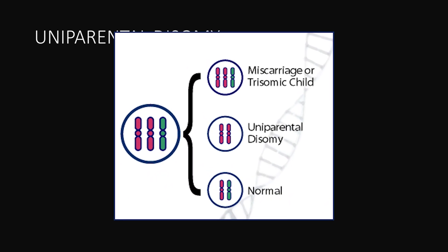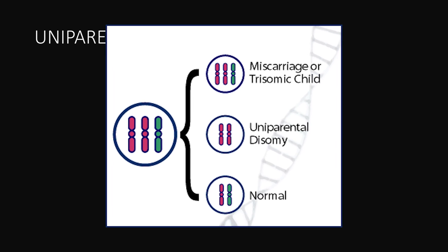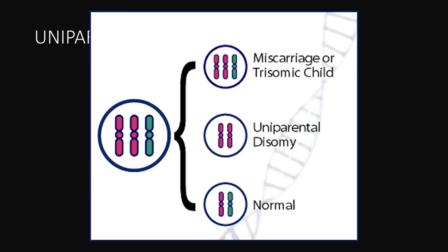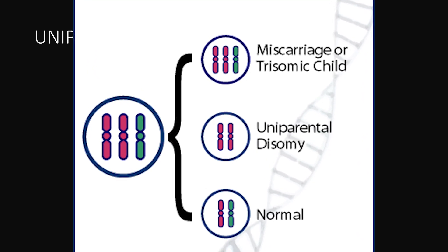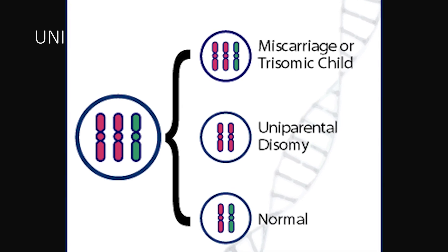Uniparental disomy occurs when offspring receive two copies of a chromosome from a single parent, whereas usually the offspring receives a single chromosome from each parent. Heterodisomy occurs when the error is in meiosis I. Isodisomy occurs during meiosis II or post-zygotic duplication of a chromosome and the loss of the other. Nonetheless, the offspring is left with two copies of the same chromosome from a single parent.